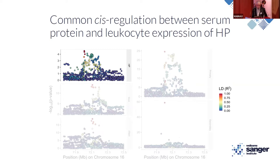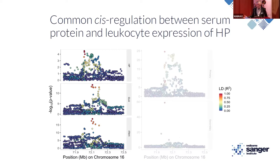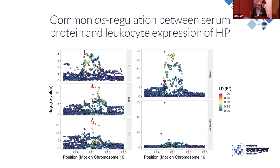The final example is haptoglobin, which also has a cis-pQTL in our dataset. The other pair of trans-pQTLs that co-localized are also in this region for clusterin and ITIH1. We confirmed with co-loc that the clusterin and ITIH1 trans-pQTL signals do not actually co-localize. However, we do have cis-eQTL for haptoglobin in whole blood — there are two signals, a primary and secondary — and our haptoglobin cis-pQTL co-localizes with the primary cis-eQTL.